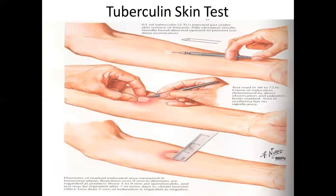The tuberculin skin test is another test to determine latent tuberculosis, in which tuberculin is injected into the skin surface of the forearm and the reading is taken after 48 to 72 hours. If the induration is more than 9 millimeters, then it is said to be positive.